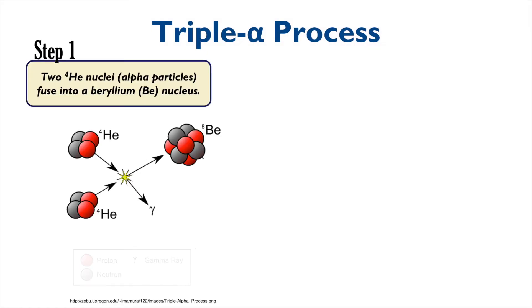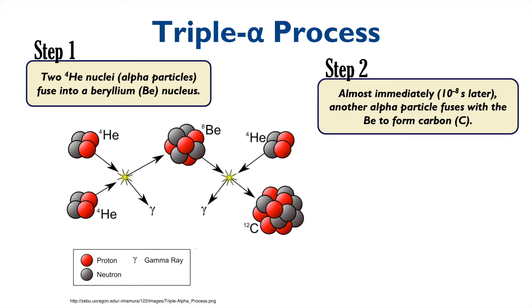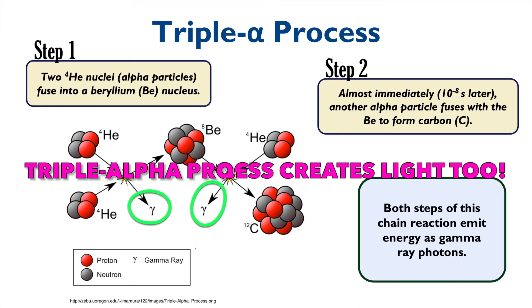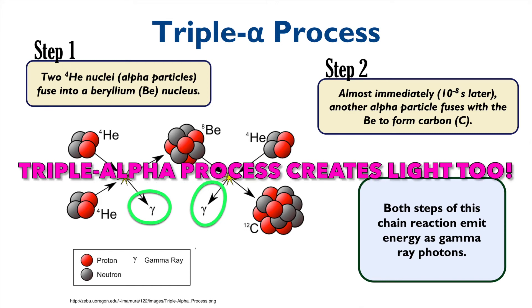We start with two helium nuclei, or alpha particles, that come together to fuse into a beryllium nucleus. Almost immediately afterwards, about a billionth of a second later, this beryllium nucleus fuses with a third alpha particle to form carbon. Both steps of this reaction emit energy as gamma-ray photons, just like the proton-proton chain did before. The triple alpha process results in the creation of light, too.